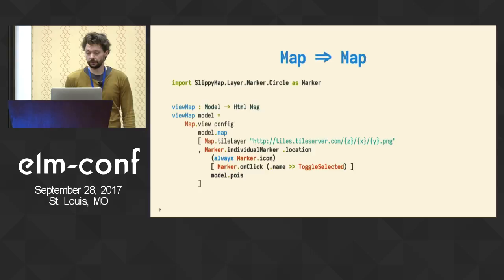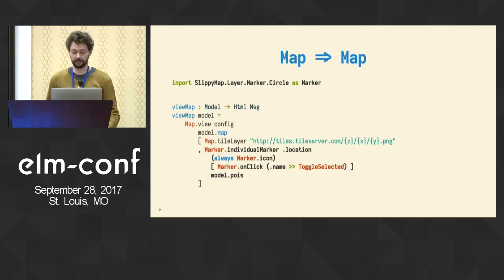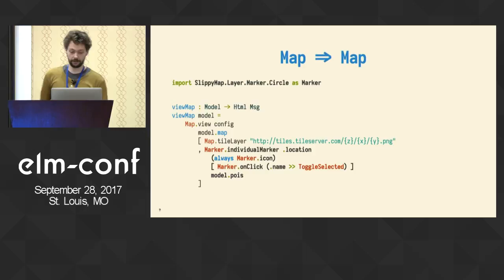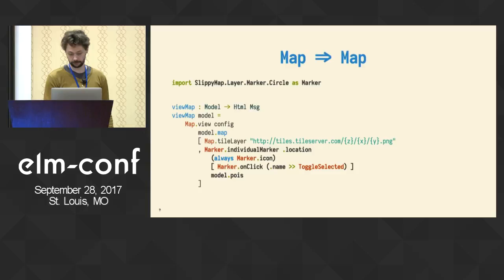Often you want to control the map from the inside — so when you click on a marker, you want something to happen. You import a special marker module so you can customize it. You say you want an individual marker for each point, grab the location, use the same icon, and on click you grab the name from the POIs and put it into the toggle-selected message. The communication involves no more translation — everything is in Elm and it works nicely.